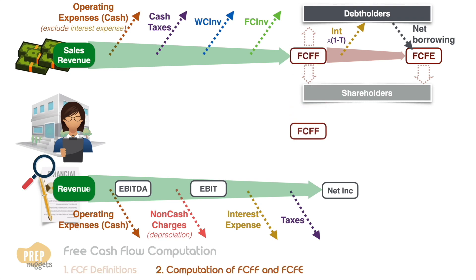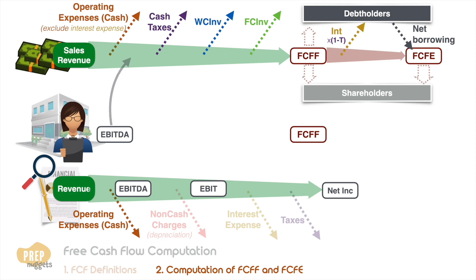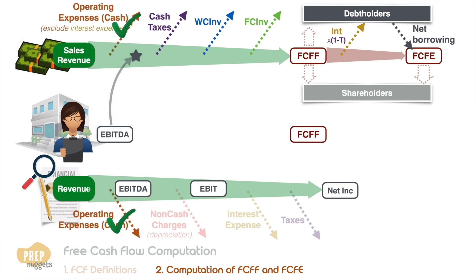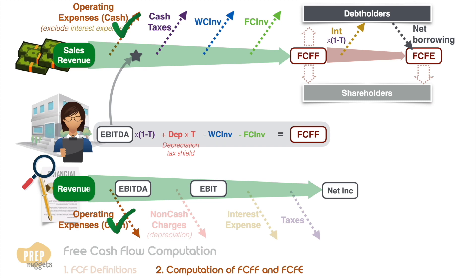To calculate FCFF from EBITDA: since EBITDA is after cash operating expenses but before taxes, we start here to cancel out cash operating expenses. We account for taxes by multiplying EBITDA by one minus the tax rate. Since EBITDA is before depreciation, we add back the depreciation tax shield, then subtract working capital investments and fixed capital investments to get FCFF.